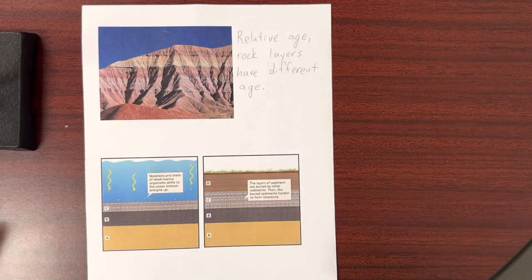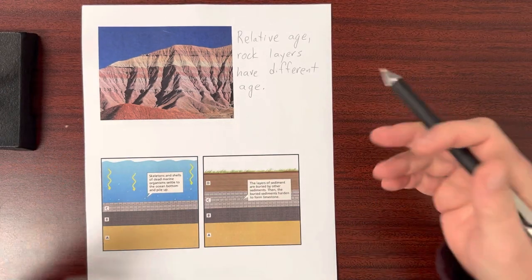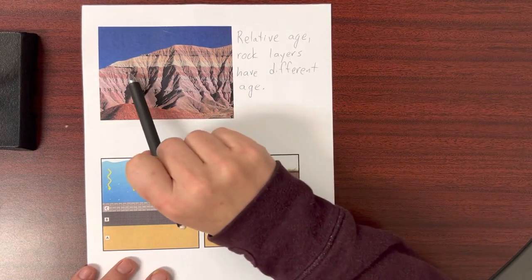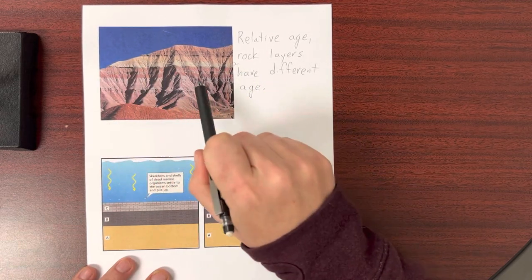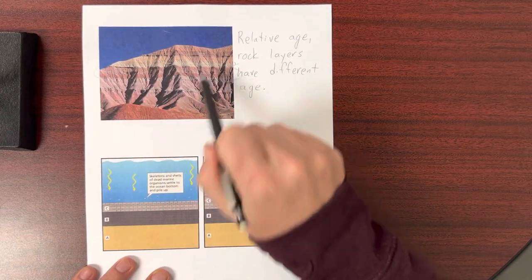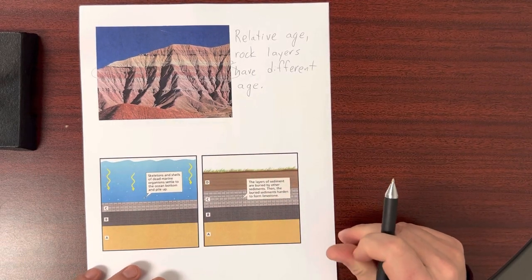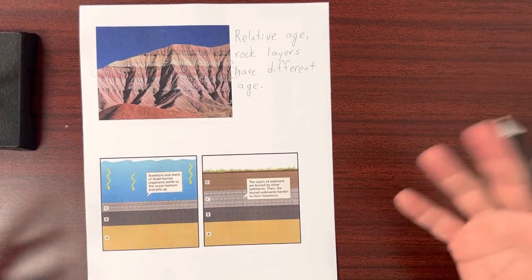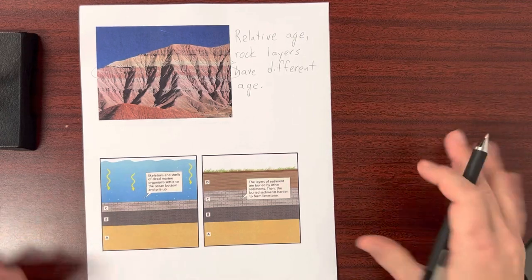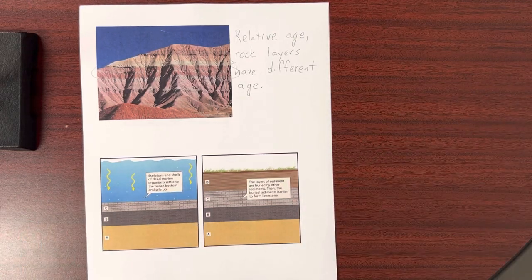And the idea of relative age just is saying that one rock layer is a different age than another. It's not saying how different the age is or what the age is. Relative age is just saying this white layer is a different age than this red layer. But we don't know the exact age of that rock, not in the 1800s.